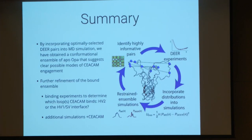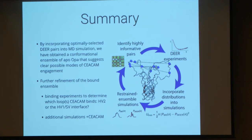By incorporating these optimally selected pairs, we learned some really important things about the Opa-CCAM system and specifically which conformation is likely engaging CCAM. But of course to determine exactly how the two are interacting, we have some more work to do. We want to do some more sophisticated binding experiments — specifically DEER experiments between Opa and CCAM rather than these Opa-Opa pairs. We also want to do additional simulations and integrate those data to try to get at the atomistic detail of the interaction. So that's where we're going next.